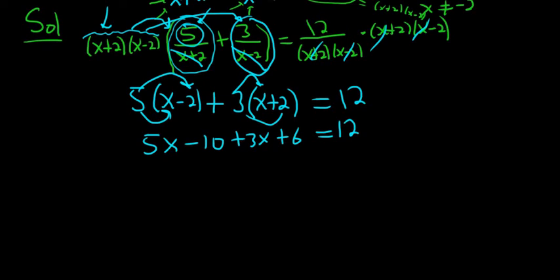We can combine like terms. So 5x + 3x is 8x, -10 + 6 is -4, and that's equal to 12.